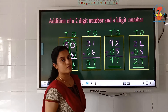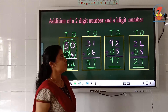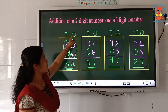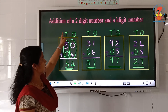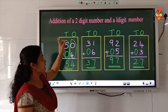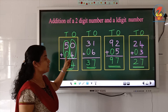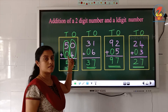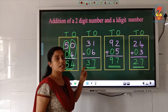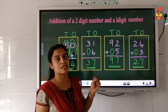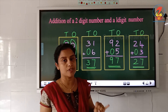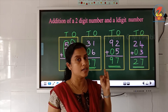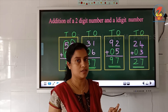So what is the first step you have to do? You have to write the place value — that is the ones place and tens place. If there is no number in the tens place, you have to put 0. Then add the numbers in the ones place first, and then add the numbers in the tens place.